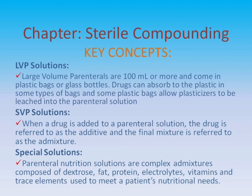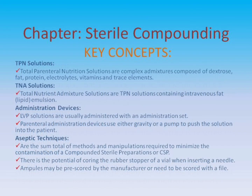Special solutions: parenteral nutrition solutions are complex admixtures composed of dextrose, fat, protein, electrolytes, vitamins, and trace elements, used to meet a patient's nutritional needs. TPN solutions — total parenteral nutrition solutions — are complex admixtures composed of dextrose, fat, protein, electrolytes, vitamins, and trace elements. TNA solutions — total nutrient admixture solutions — are TPN solutions containing intravenous fat or lipid emulsion.